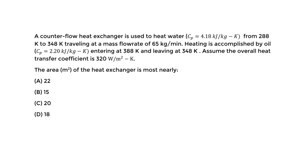Let's do a calculation-based question for heat exchangers. We have a counter flow heat exchanger used to heat water with a specific heat capacity CP at constant pressure of 4.18 kJ per kg Kelvin. This value is not in the handbook, so you should memorize it for water or it will be given to you on the FE. We're heating this water from 288 Kelvin to 348 Kelvin, traveling at a mass flow rate of 65 kg per minute.